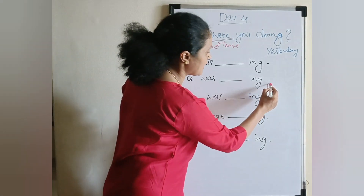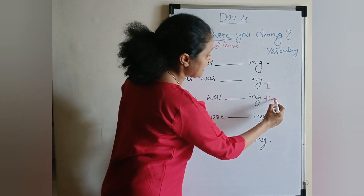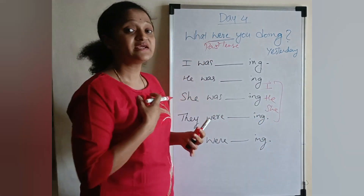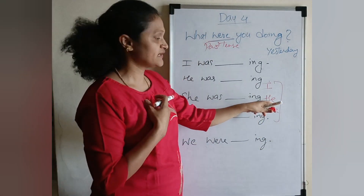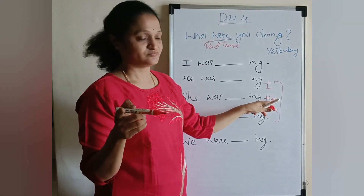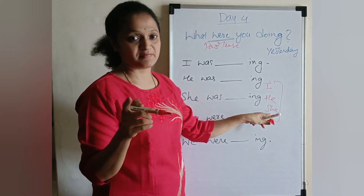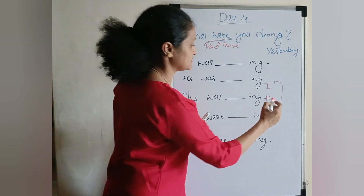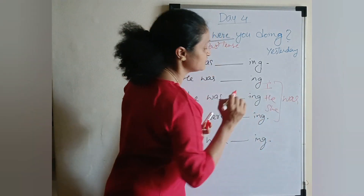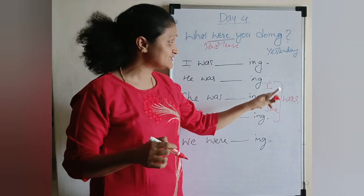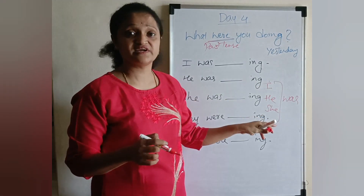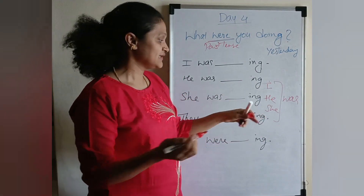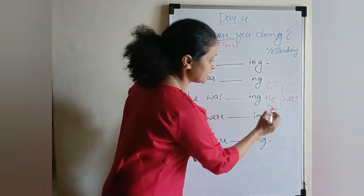So again, the pronouns I, He, She — these are singular, only one. For singular subjects, we use 'was'. Instead of these pronouns, we can use names also. For example, a name like Saai — it is a singular name, so Saai 'was'.